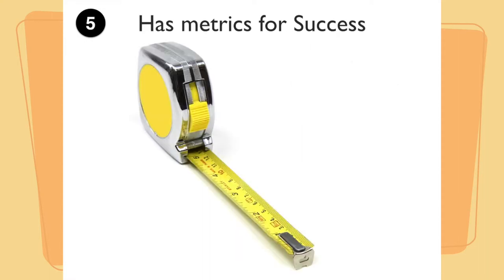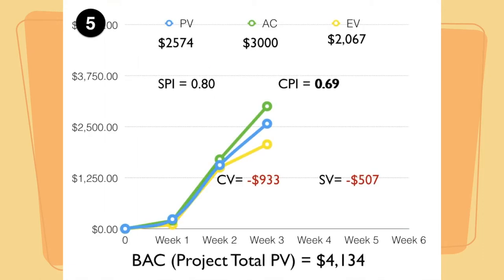Fifthly, there is some measure for success. So we have some way to judge our progress as the project moves forward. In a traditional project, we might use something like earned value metrics to come up with some measure of our project and a projection for where we are going to end up. In agile projects, we might use something like a burndown chart to give us an understanding of where we are in the project, as well as the amount of time to complete the work that we currently have scheduled.